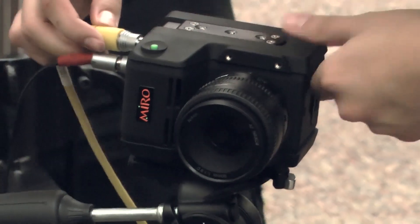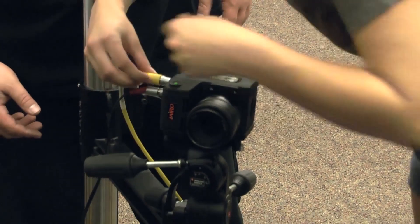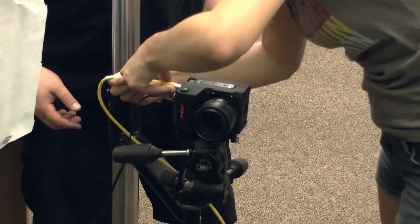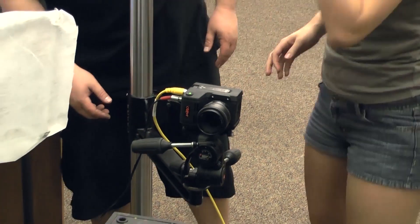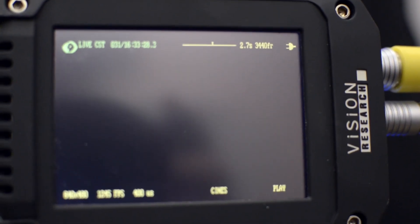This camera is a Phantom Miro EX2. It's the baby brother to the Phantom HD Gold that all that slick slow motion footage is being shot on in the big movies. This one's capable of 1200 frames per second but only at 640x480 resolution.